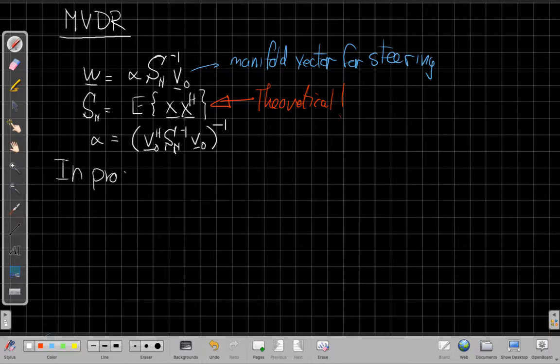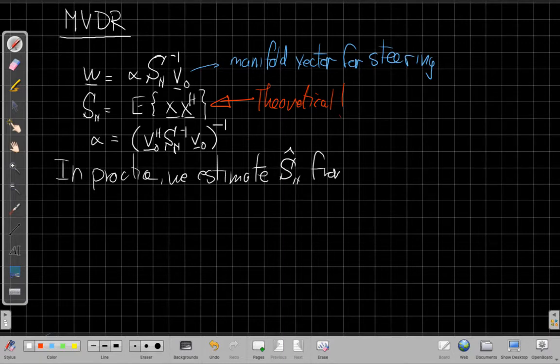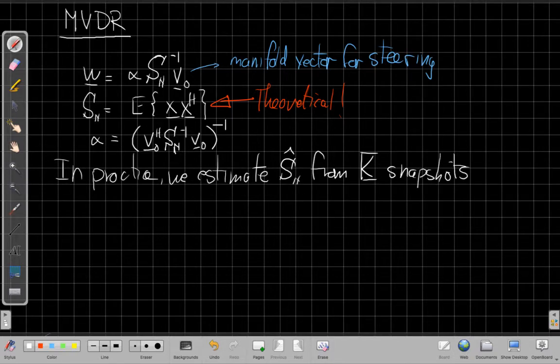In practice we estimate, we'll call it S_N hat, from capital K snapshots. Those are measurements of the array data: X sub 1, X sub 2, up to X sub K.